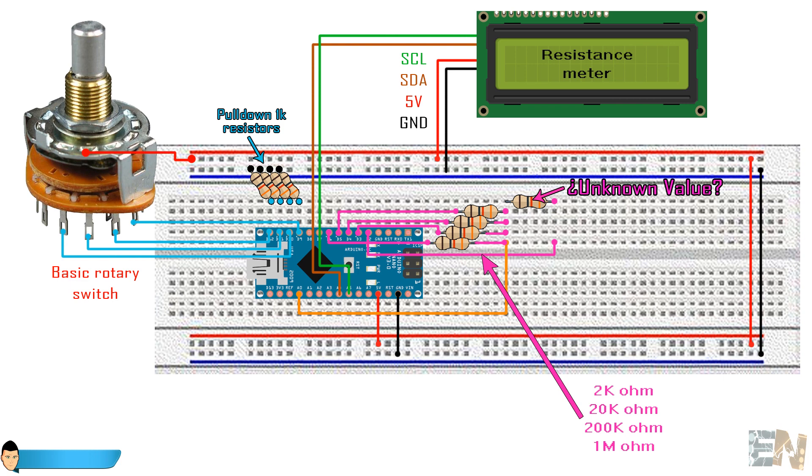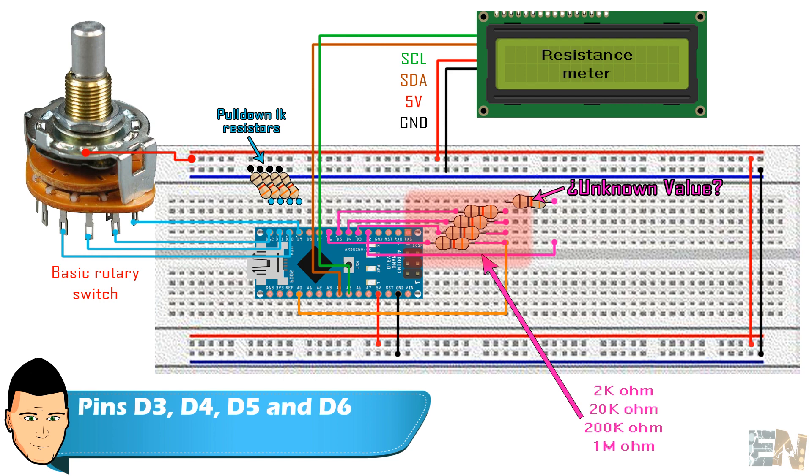To change the scale, you could use switch buttons or a rotary switch. So this is the final schematic that we are going to build. These are the 4 fixed resistors connected to 4 digital pins and to a common point with the unknown resistor.